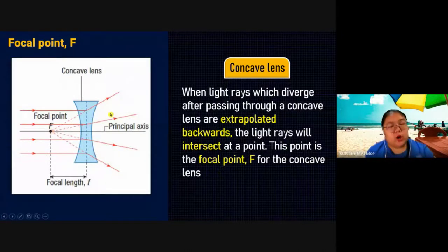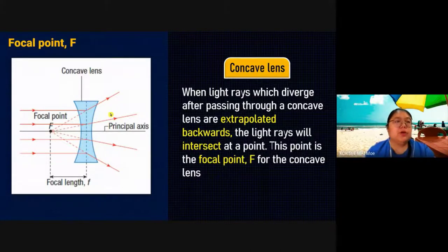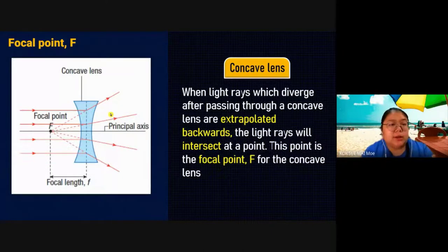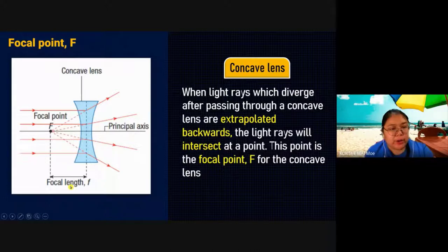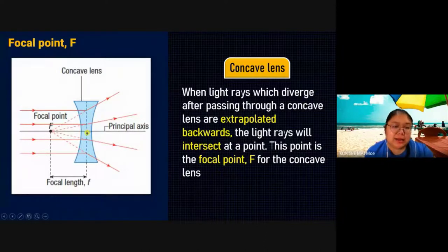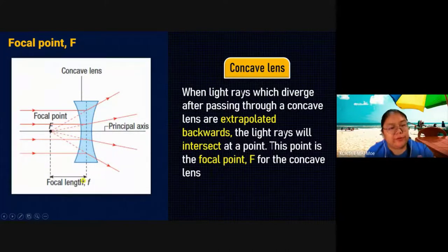For the concave, no need to pull back — for convex, straight forward go and focus to the front focal point. Make sure you differentiate the convex and concave focal point locations. Focal length is always the distance between the focal point and the center of the lens — small f.